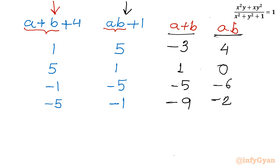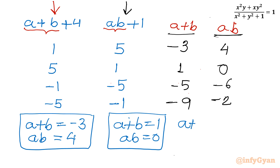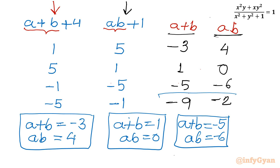So we have four systems of equations to solve. System A: a+b = -3, ab = 4. System B: a+b = 1, ab = 0. System C: a+b = -5, ab = -6. System D: a+b = -9, ab = -2.